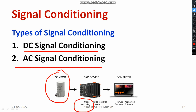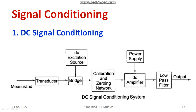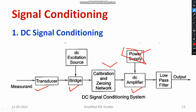Let us discuss the DC signal conditioning device first. The basic block diagram of a DC signal conditioning device comprises a transducer or sensor, then a bridge network powered by a DC supply, a calibration and zero-closing network, and a DC amplifier. To operate the DC amplifier, we need a power supply unit. In order to remove high-frequency signals, we need a low-pass filter.